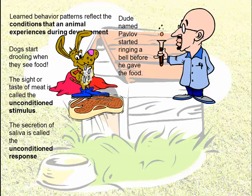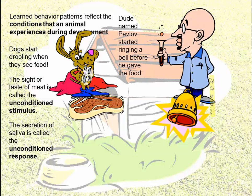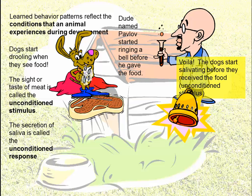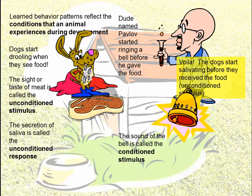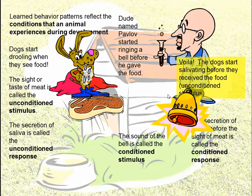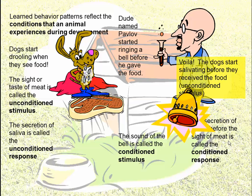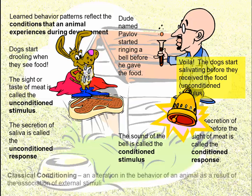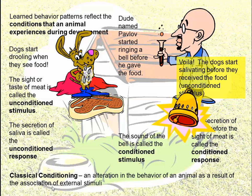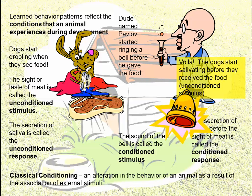Pavlov started ringing a bell before giving the dog food, adding to the stimulus. After a while, the dogs learned a behavior: whenever they hear the bell ringing, they start to salivate automatically, almost as if expecting food. Now we give these different names — the sound of the bell is called the conditioned stimulus, and the secretion of saliva before the sight of meat is called the conditioned response. This is a learned behavior and an example of classical conditioning: an alteration in behavior as a result of association with an external stimulus — in this case, the ringing of the bell.